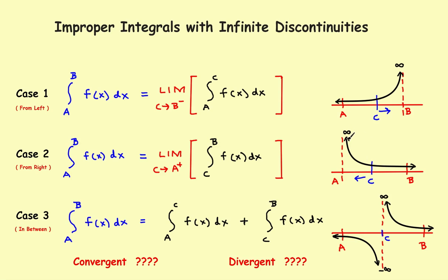We'll look at one problem where it converges and another problem where it diverges. You'll have to decide whether it's convergent and you have a solution, or it's divergent and you don't have a solution. If you're confused by this, watch the part 8 video — it explains where all this came from. Let's take a look at the problem.